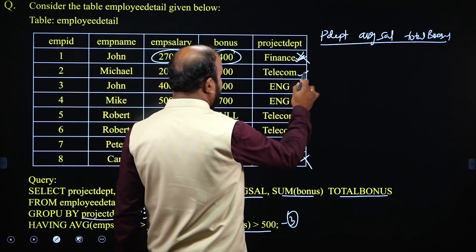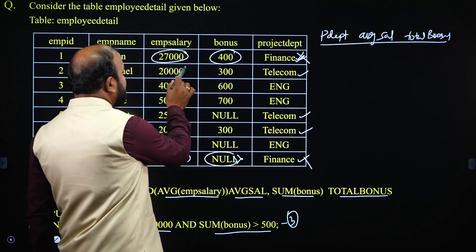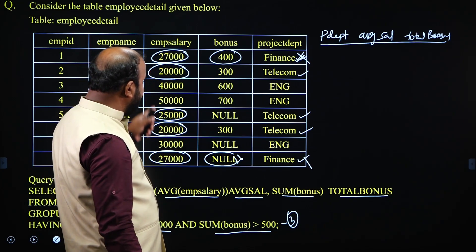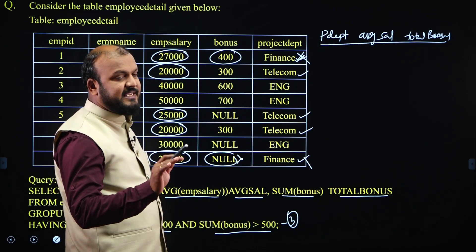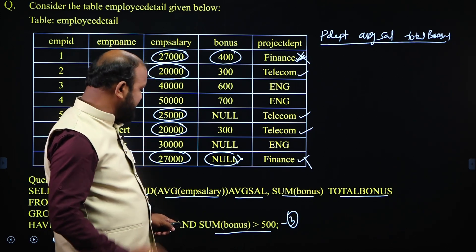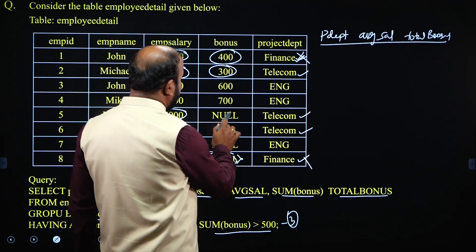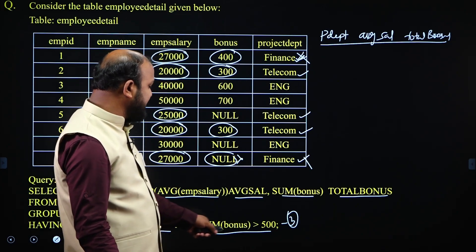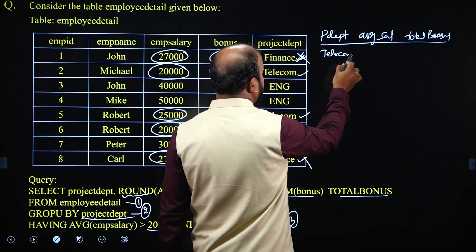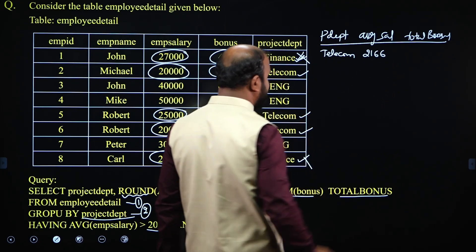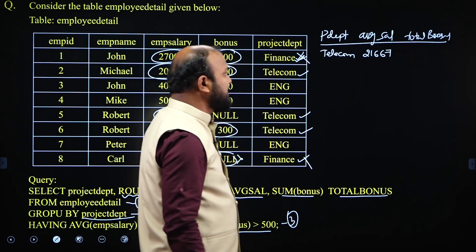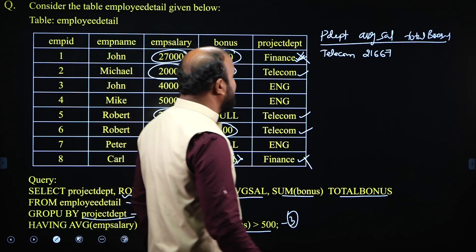For the telecom group, there are three tuples with EMP salaries of 20,000, 25,000, and 20,000. The average is 65,000 divided by 3, which is 21,666-point-something — greater than 20,000, so first condition is true. The bonuses are 300, null, and 300; sum is 600, which is greater than 500 — true. So the telecom group is selected. Project department is telecom, average salary is 21,666-point-something, but it is rounded to the nearest integer: 21,667. Total bonus is 600.